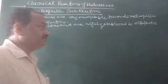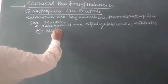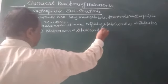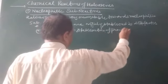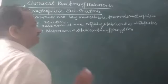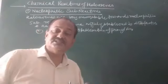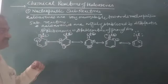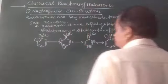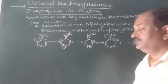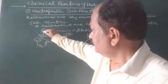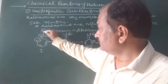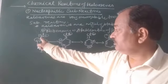The first factor is resonance — the resonance stabilization of the phenyl ring. The phenyl ring is stabilized by resonance, and as a result, nucleophile attack is hindered. The resonance structures show extra stability of the carbon-halogen bond in haloarenes.